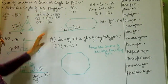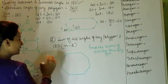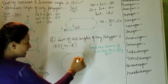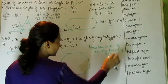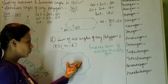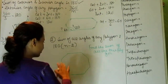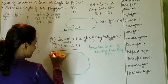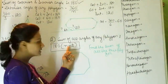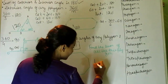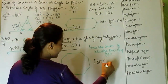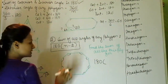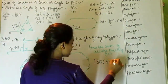Next trick: the sum of all interior angles of any polygon is 180 multiplied by (N minus 2), where N is the number of sides. We are given this figure and have to find the sum of all its angles. Counting the sides: 1, 2, 3, 4, 5, 6, 7, 8 — this is an octagon. So we calculate 180 times (8 minus 2) equals 180 times 6.